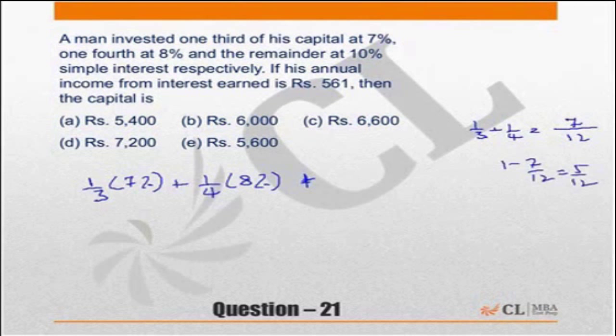So the remainder of 5 by 12 he gets 10%. So what is the average rate of interest? Effectively, this is what this question is all about. So to make your life easier, we can even forget the percentage.